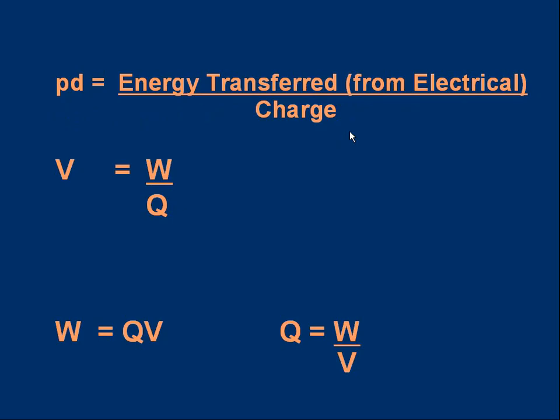In symbolic form potential difference, or we often use V, capital V meaning voltage. And W for work energy transfer divided by charge. It's really the same formula as EMF. And it can be arranged to give us W equals QV or Q is W over V. Depends what you want to work out.